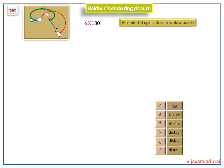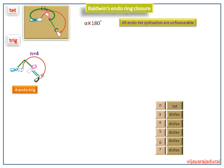Next we see the endo ring closure rule for the trig-hybridized molecule. This is the trig-hybridized molecule for N equal to 4. The number of atoms is counted from the nucleophile — 1, 2, 3, 4 — to the carbon electrophile. The nucleophile attacks the electrophilic carbon atom in endo fashion, so it is called 4-endo-trig. Here the nucleophile cannot attack the electrophilic carbon atom with a favorable angle of 109 degrees, since the angle α is larger than required. So it is not a favorable reaction.